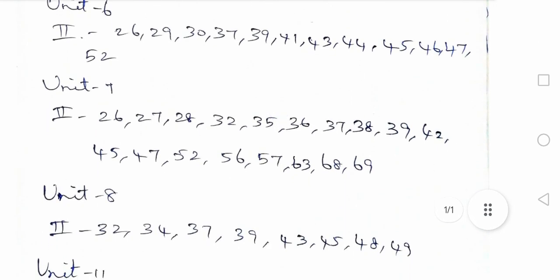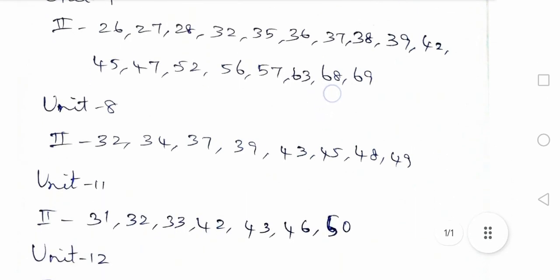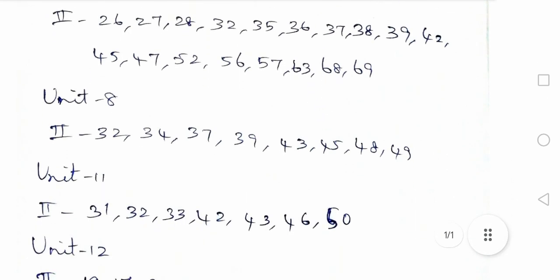And also Unit 7, 2nd Romalateral: 26, 27, 28, 32, 35, 36, 37, 38, 39, 42, 45, 47, 52, 56, 57, 63, 68, 69. This question is about to go.